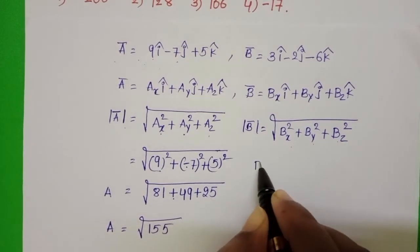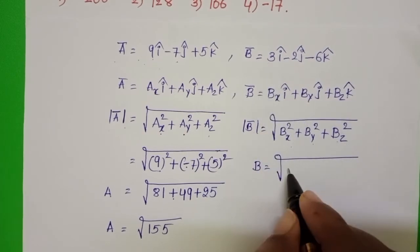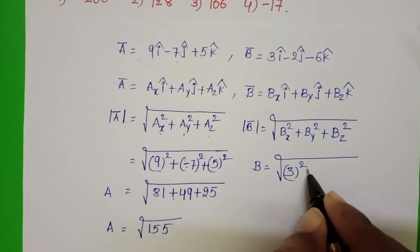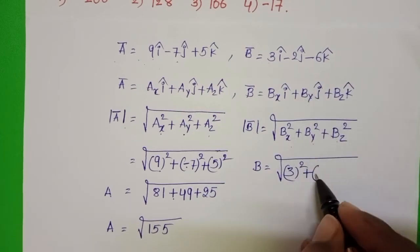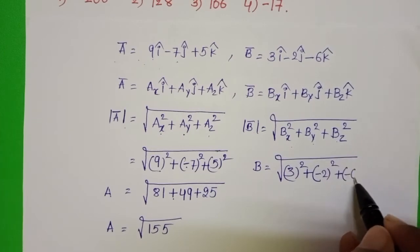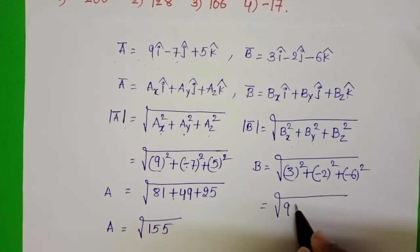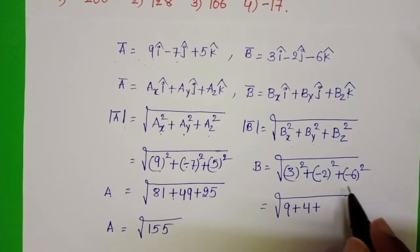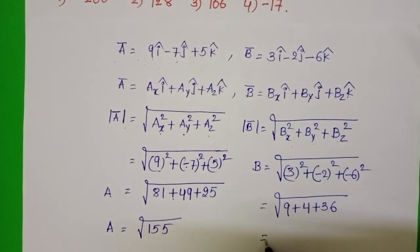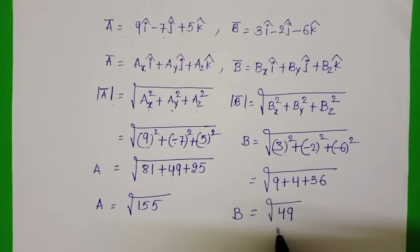Now find |b̄|. |b̄| equals b. bx equals 3, by equals minus 2, bz equals minus 6. So |b̄| equals square root of 3² plus (−2)² plus (−6)² equals square root of 9 plus 4 plus 36 equals square root of 49. So b equals square root of 49, which is 7.